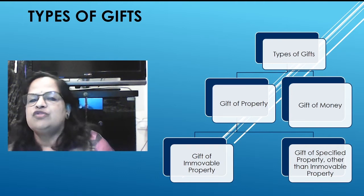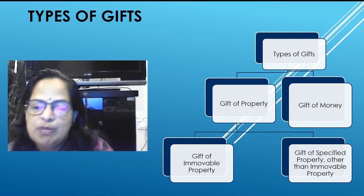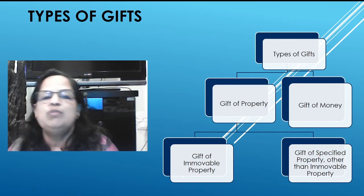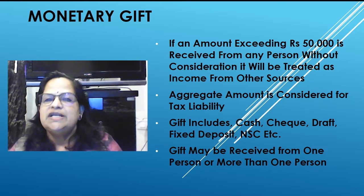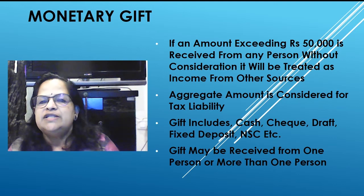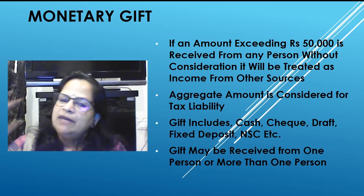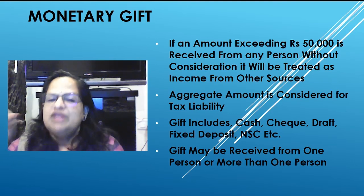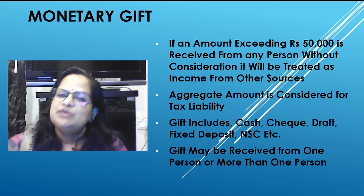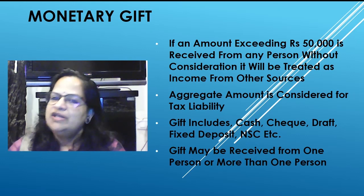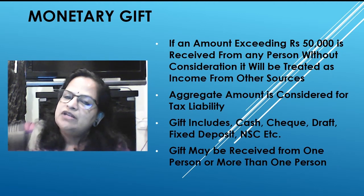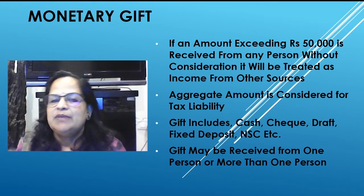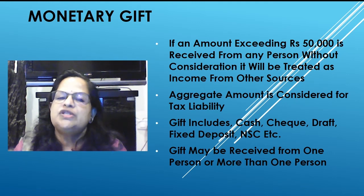Gifts are divided into two types: gift of property and gift of money. Gift of property is further divided into gift of immovable property and gift of specified property other than immovable property. Monetary gift: if an amount exceeding 50,000 rupees is received from any person without any consideration, it is treated as income from other sources. The aggregate amount from multiple persons is considered. Gift includes cash, cheque, draft, fixed deposit, national savings certificates, etc.